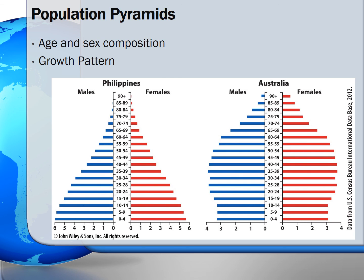Population pyramids have different shapes — three basic shapes that represent different growth patterns. A true pyramid-shaped graph, like the one for the Philippines, indicates the population is growing rapidly. A cylinder shape, like that of Australia, indicates the population is growing but very slowly. A cylinder-shaped pyramid usually tapers off at the higher end of the age range but will keep an even shape for most part from birth until then.